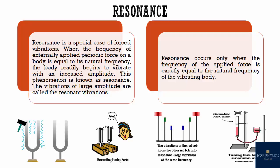Resonance occurs only when the frequency of the applied force is exactly equal to the natural frequency of the body. For example, if two identical tuning forks A and B of the same frequency are placed upon separate sound boxes such that their open ends face each other, and one prong of tuning fork A is struck, the other tuning fork B also starts vibrating and a loud sound is heard.